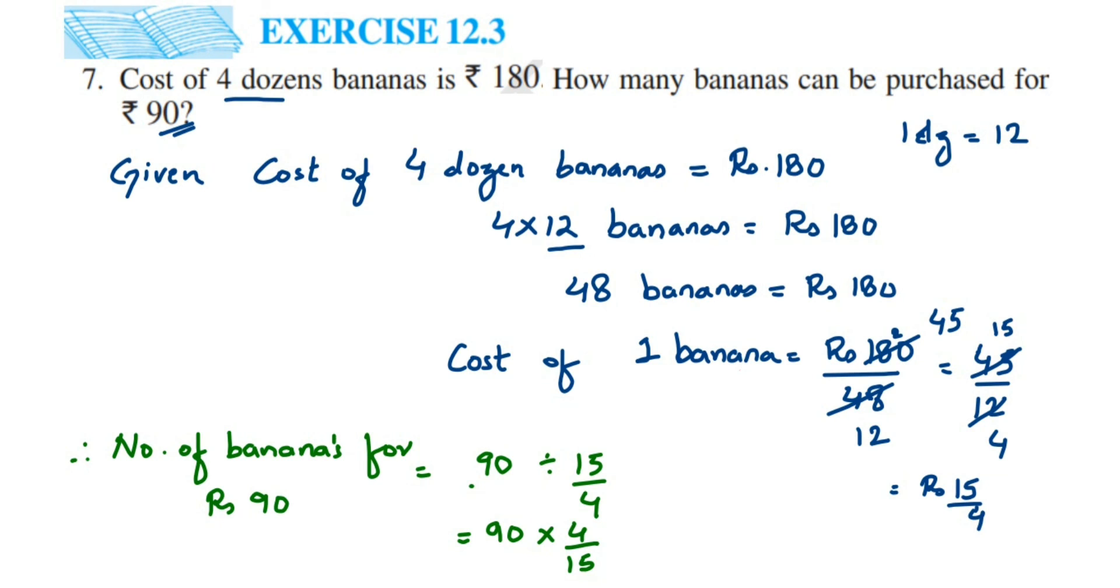15 ones are 15, and 15 sixes are 90. Now we have 6 and 4 - 6 times 4 is 24. So we got 24 here, which means we can purchase 24 bananas for 90 rupees. That's it. So it's a very simple question, I hope it's clear.